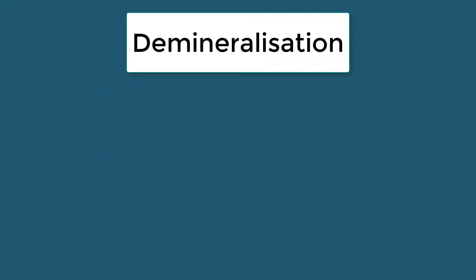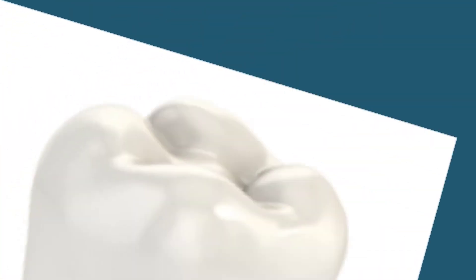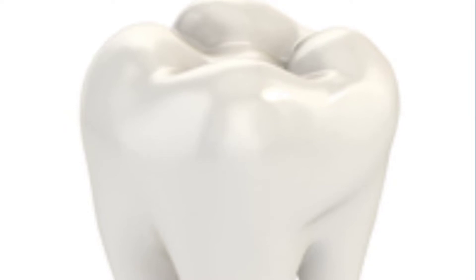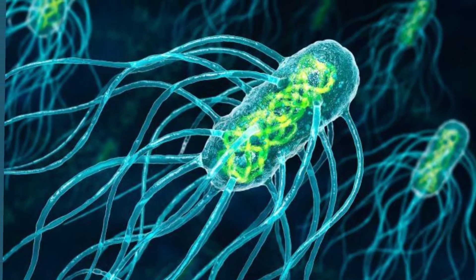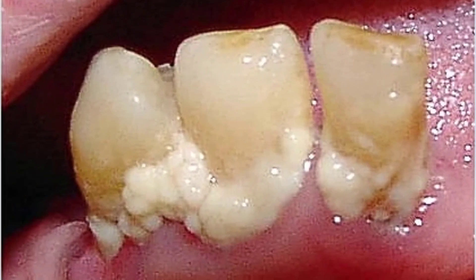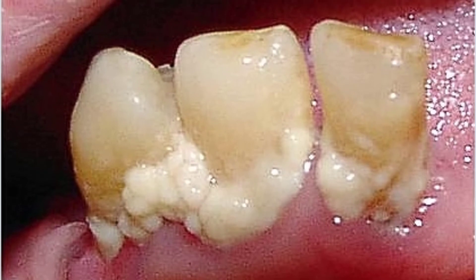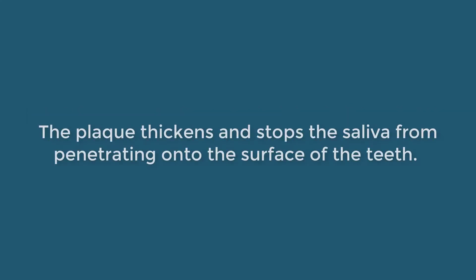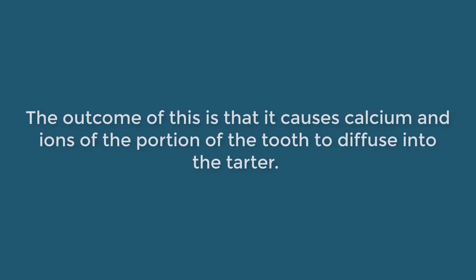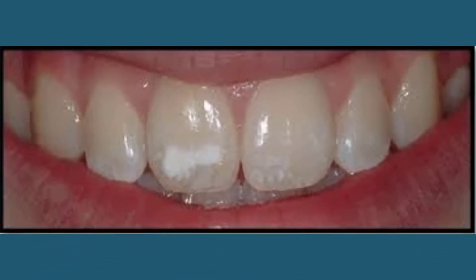Demineralization is a process where important minerals such as calcium and phosphorus are removed from the tooth's structure, mainly due to the increase in acidic activity caused by bad bacteria. These bacteria multiply and attach to teeth in large numbers and cause plaque to build up. The bacteria and plaque love multiplying, especially because of the oxygenated environment. If your oral hygiene is not up to scratch, the plaque thickens and stops the saliva from penetrating onto the surface of the teeth. The outcome is that it causes calcium and ions of the portion of the tooth to diffuse into the tartar. This is how white spots start to appear.